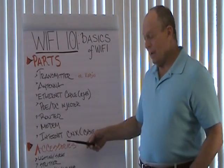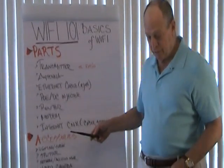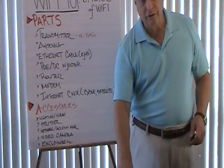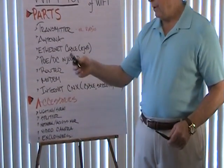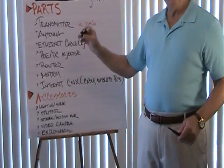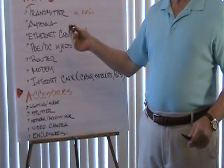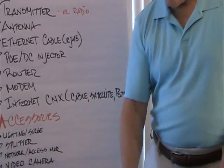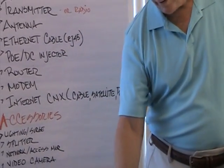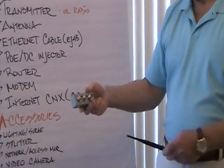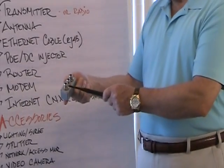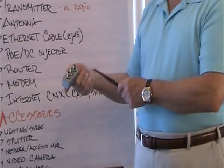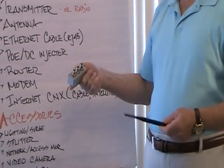After that, we have some optional accessories. For example, a lightning and surge protector — this may protect your equipment from lightning strikes. After that, we have a splitter, an antenna splitter, so that we can add more than one antenna to any particular transmitter.